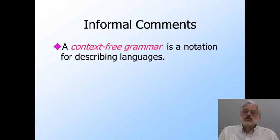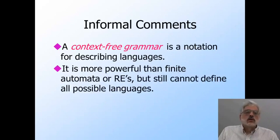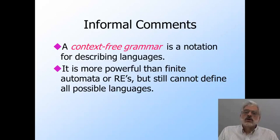A context-free grammar defines a language by a mechanism we will soon learn. Every regular language has a context-free grammar describing it, but there are also languages that can be described by a grammar but that are not regular. On the other hand, the context-free grammar is still a relatively weak formalism — there are some languages that are simple to describe yet have no context-free grammar.